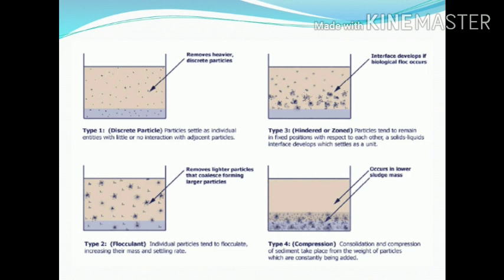The given figure describes the different types of settling that occur during the sedimentation process in water treatment. Type 1 shows discrete settling where particles get deposited individually at the bottom of the sedimentation tank. Types 2, 3, and 4 are as already explained.